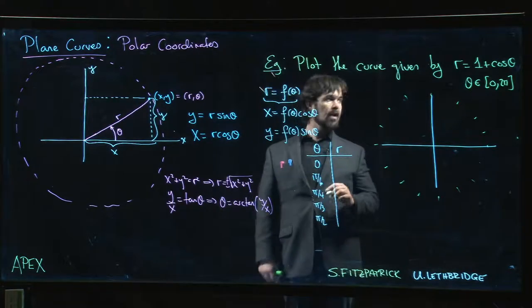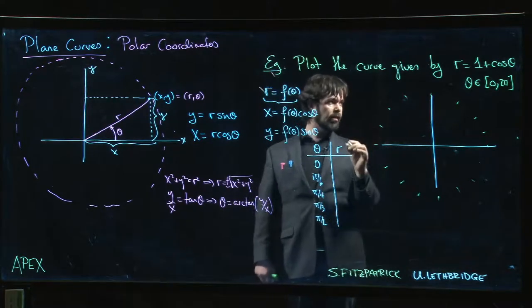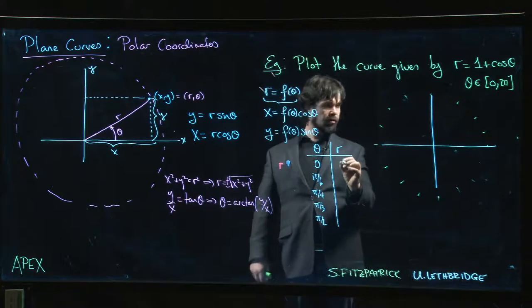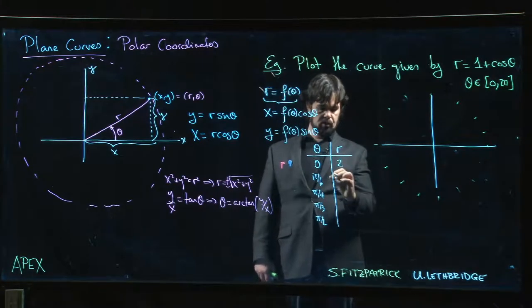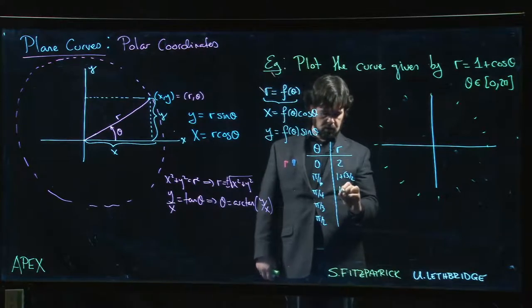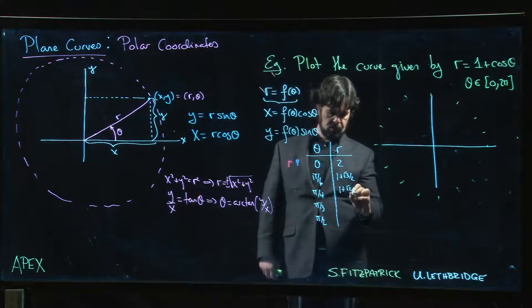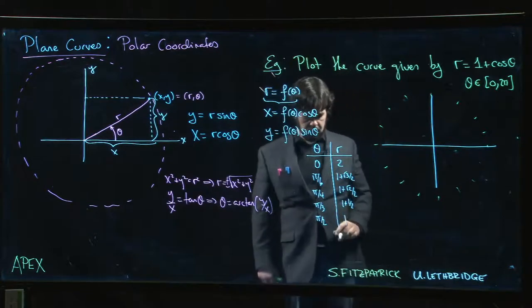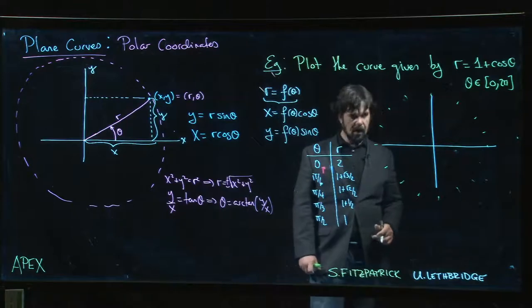Then we can start plotting the r values. Cos theta, cos of zero is one, one plus one is two. And then I get one plus root three over two, one plus root two over two, one plus a half and I get one.